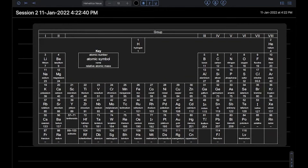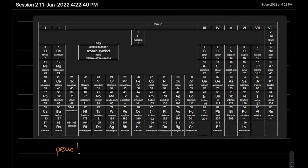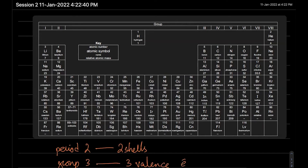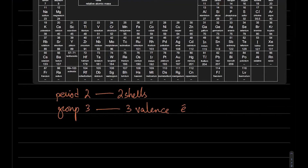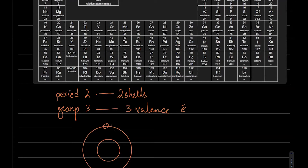The period number tells you the shell number. So period 2 means the atom has two shells. If it's in group 3, it has three valence electrons. You can draw the structure without even knowing the element: two shells, three electrons in the last shell, two in the first. This is boron — five electrons, configuration 2, 3.